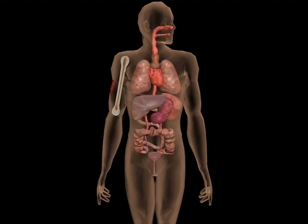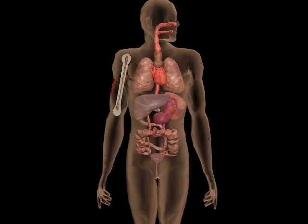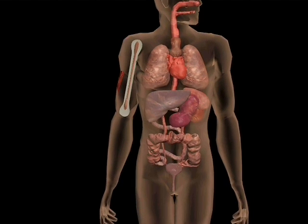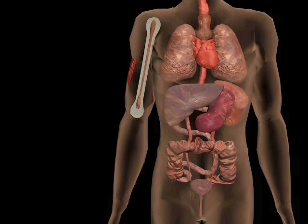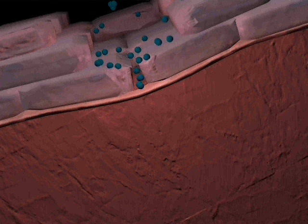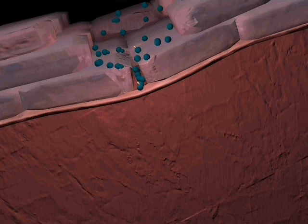Another possible route of entry for bacteria is through broken skin. For example, C. tetani, the causative agent of tetanus. A bacterial colony could become established following a wound.